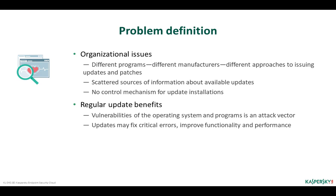To fix Windows vulnerabilities, it is sufficient to regularly install the updates issued by Microsoft. The Windows Update System service takes care of that. To fix vulnerabilities in applications by other manufacturers, it is usually sufficient to install a new program version or a patch issued by the manufacturer.